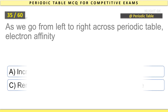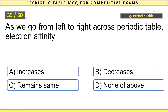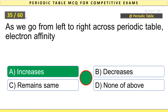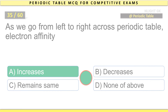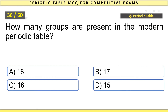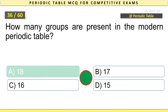As we go from left to right across the periodic table, electron affinity increases. How many groups are present in the modern periodic table? 18.